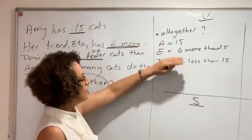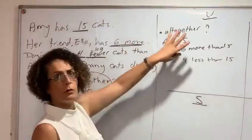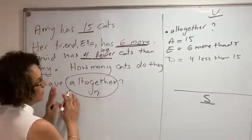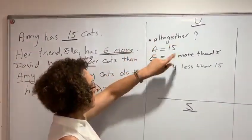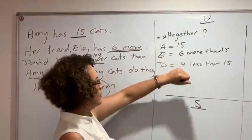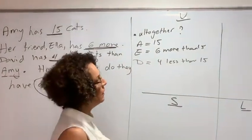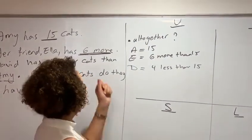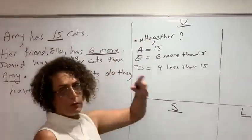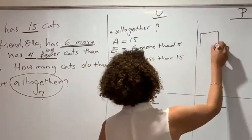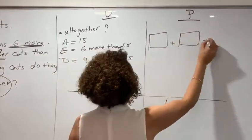Now if I look at this, I can understand the question. I can read the question without reading the whole thing. So I need to find all together. Amy has 15, Ella has 6 more, and David has 4 less. And now we can start planning. Students know that when we ask about all together, we have to combine quantities. So we have 3 quantities to add.